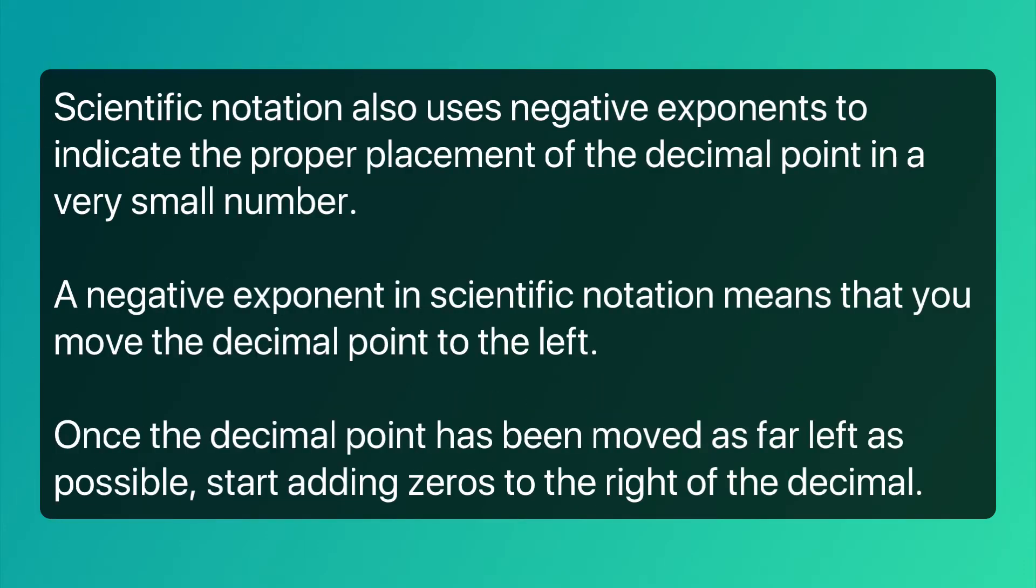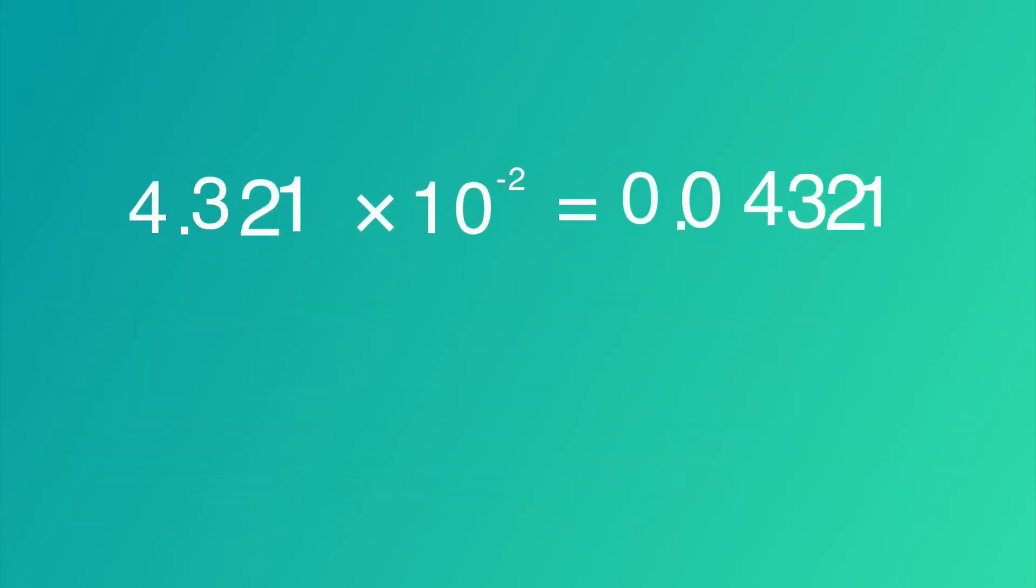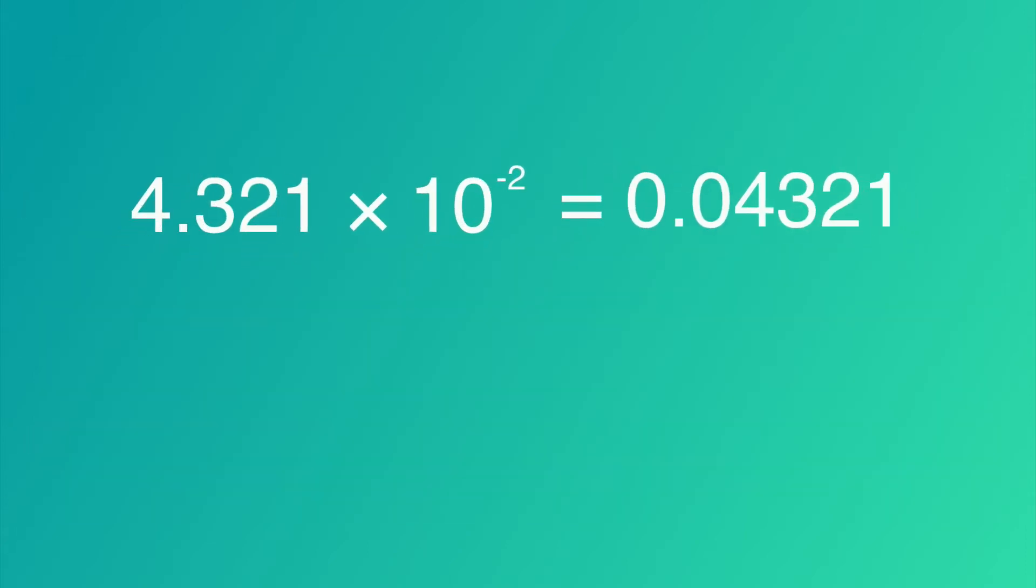Scientific notation also uses negative exponents to indicate the proper placement of the decimal point in a very small number. A negative exponent in scientific notation means that you move the decimal point to the left. Once the decimal point has been moved as far left as possible, start adding zeros to the right of the decimal. As an example, we have 4.321 times 10 to the negative second power. This equals 0.04321.